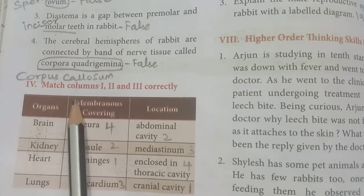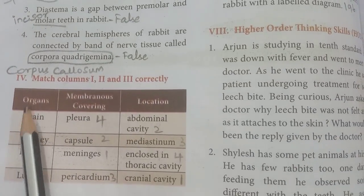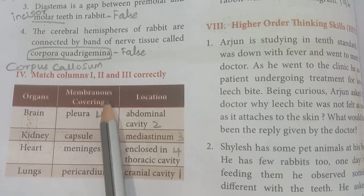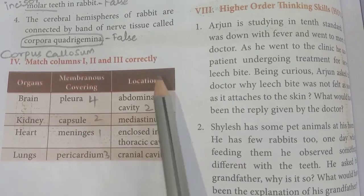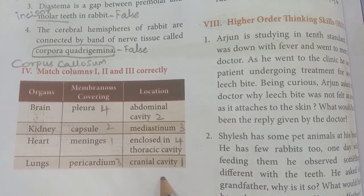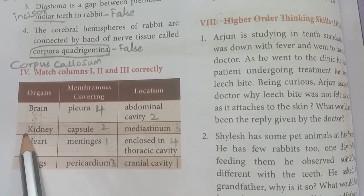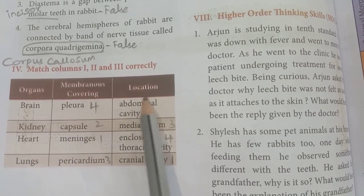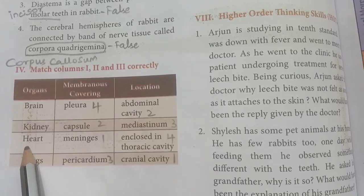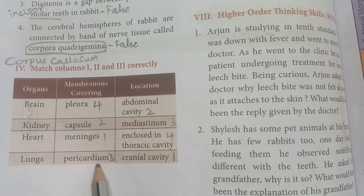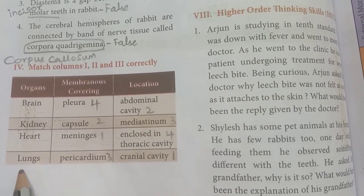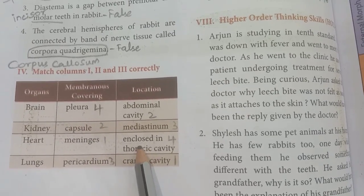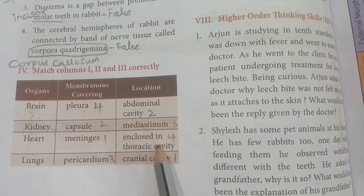Roman number 4: match column 1 and column 2 correctly. Brain — membranous covering is meninges — location is cranial cavity. Kidney — covering is capsule — location is abdominal cavity. Heart — covering is pericardium — location is mediastinum. Lungs — covering is pleura — enclosed in thoracic cavity.